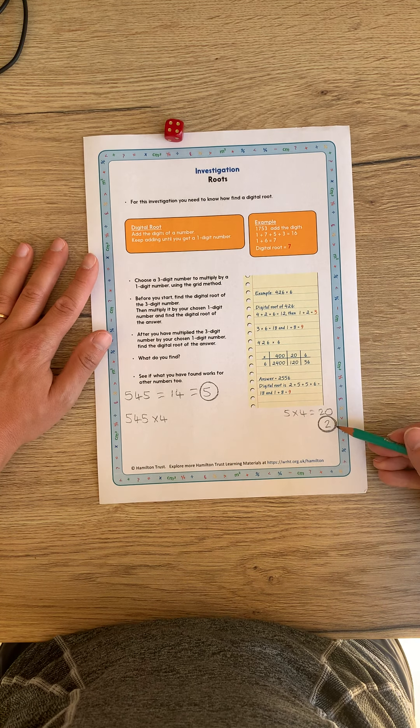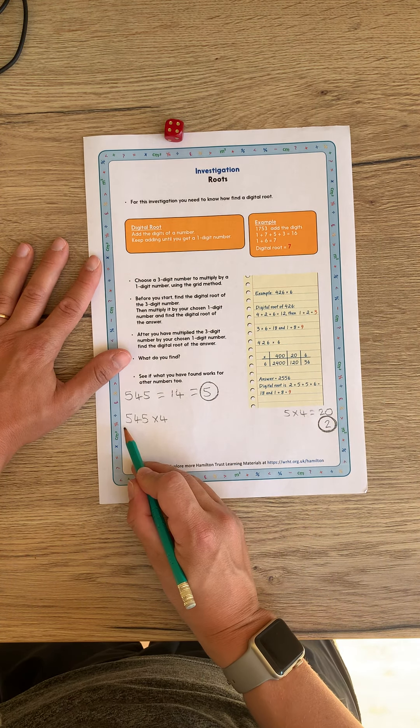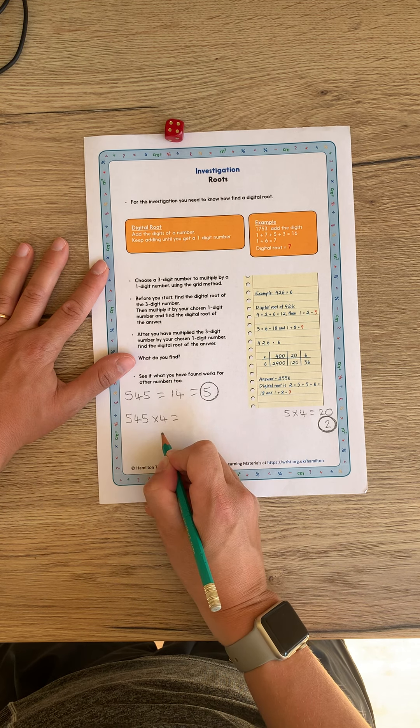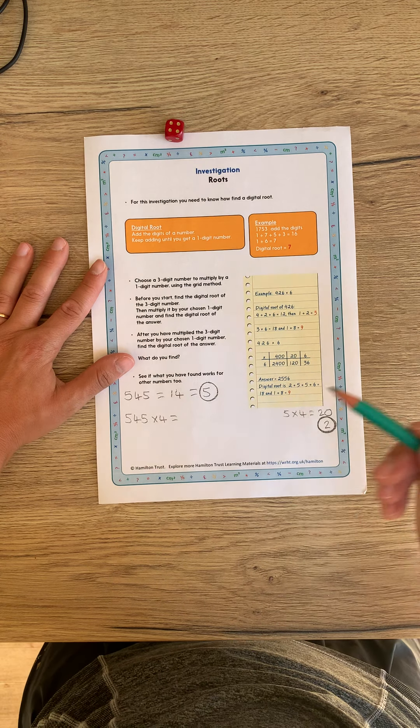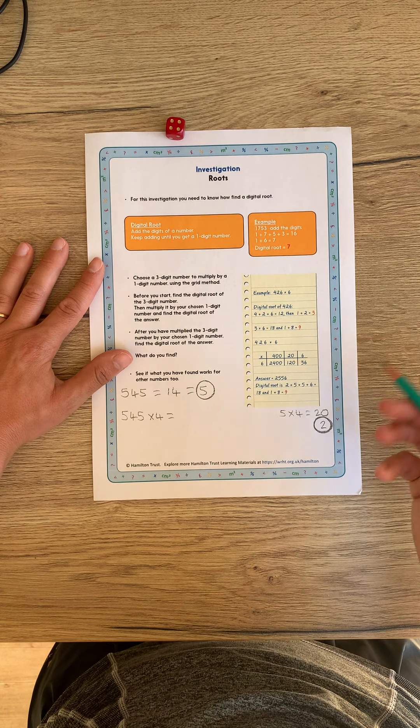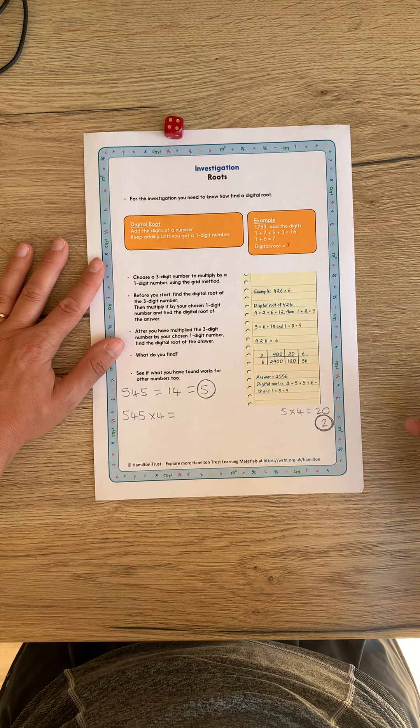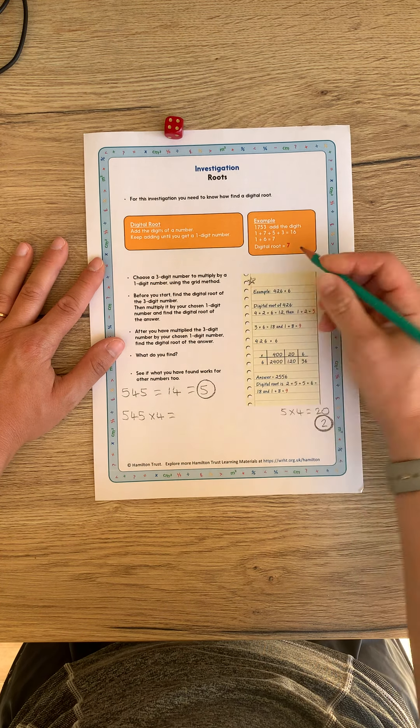Then, what I'm going to do is, using the grid method, work out the answer to this number sentence. And then I will work out the digital route of my answer. And I hope that it's going to be two. And we'll see if it works. There is another example right here as well.